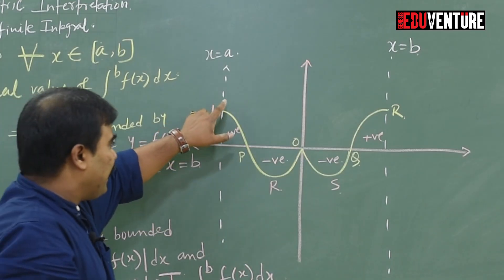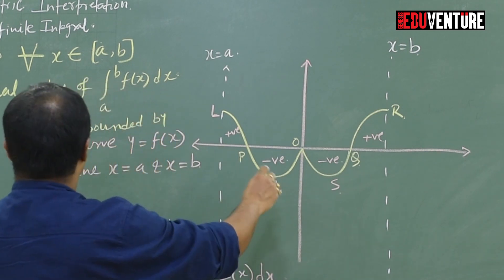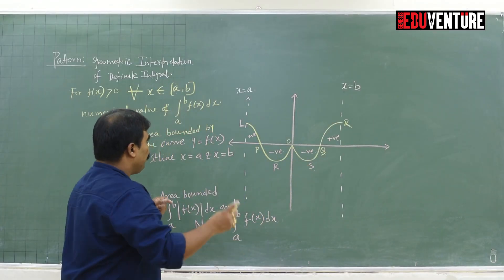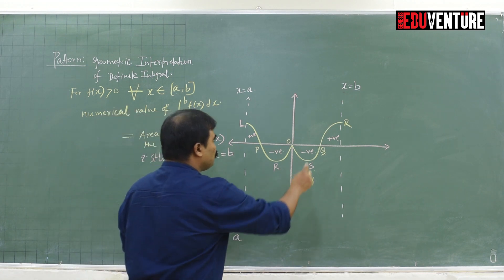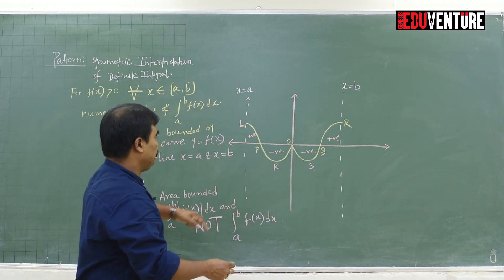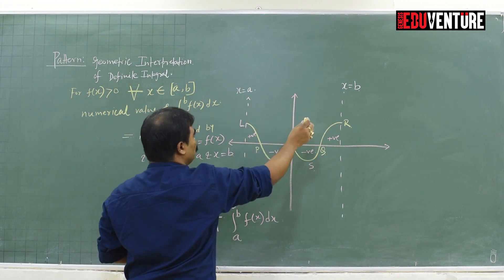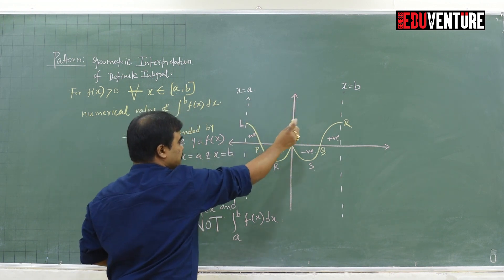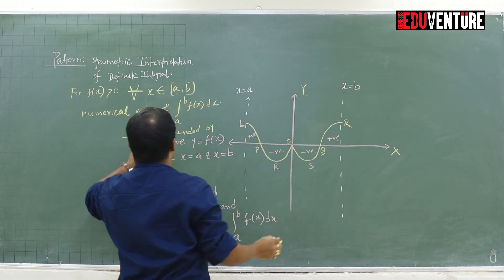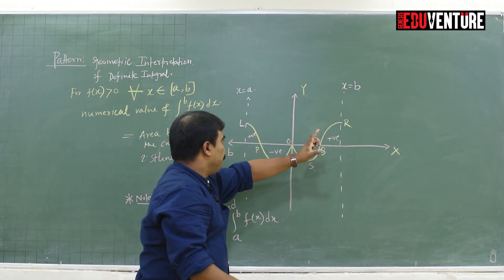We have a very random curve. That curve can be demonstrated as y = f(x). We have two straight lines: one is x = a, which is parallel to the y-axis, and x = b.